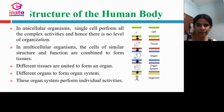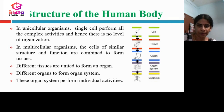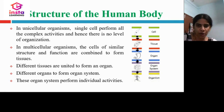Different organs together form organ systems, such as the digestive system, respiratory system, circulatory system, excretory system, etc. Each organ system performs different activities. For example, the circulatory system helps in the functioning of the heart, the digestive system helps in digestion of food, and the excretory system helps in the excretion of waste products from the body.